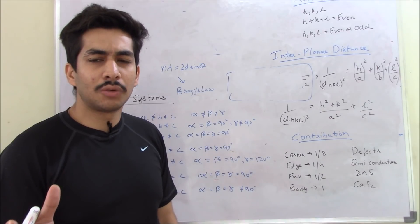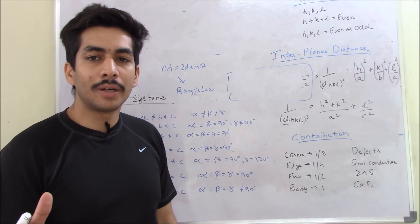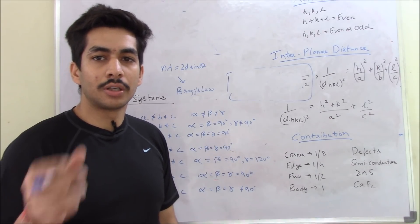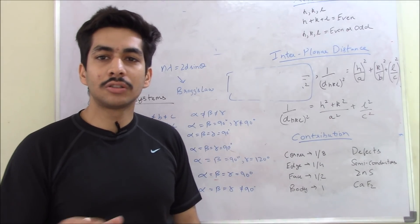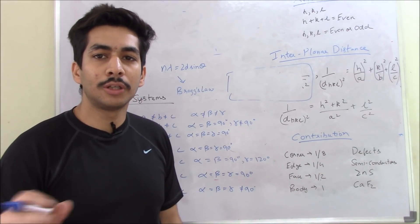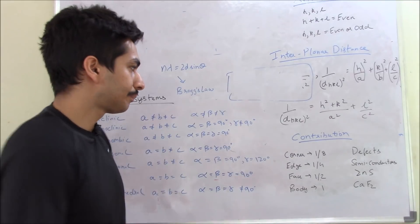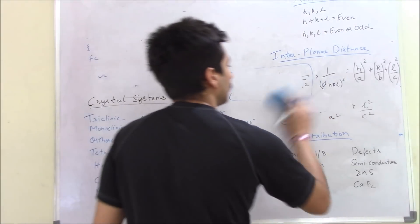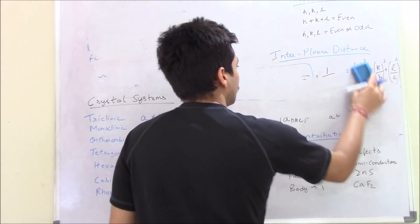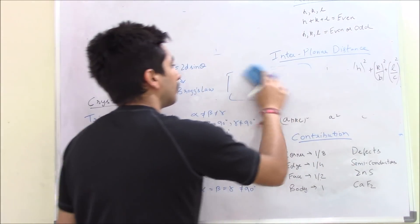There is one more system — rhombohedral — where A = B = C as well. So just be careful about which formula applies to which crystal system.